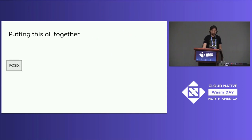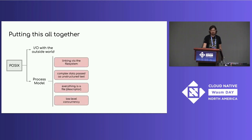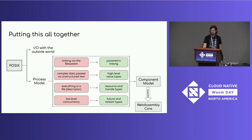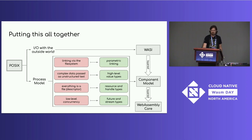Putting this all together: we started with POSIX, which defines I/O with the outside world and a process model. We identified four pain points with the process model and four proposed design alternatives — and performing that substitution is the component model. It's layered on top of WebAssembly core, with WebAssembly providing the portable instruction set bundled into abstract black-box reusable units of code. This frees WASI to do what it was originally designed to do: define I/O with the outside world, layered on top of the component model, with modular interfaces for logging, config, file system, sockets, gRPC, and more.